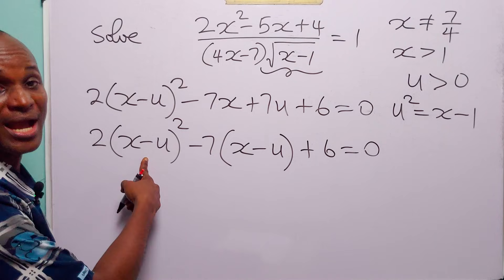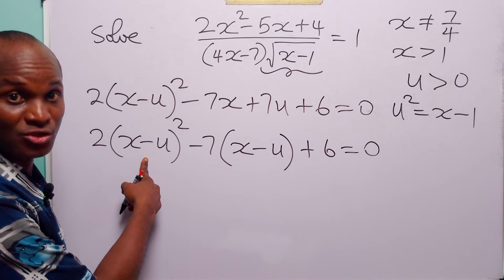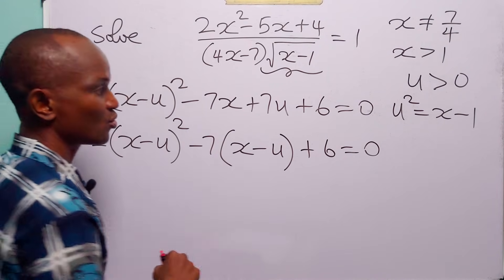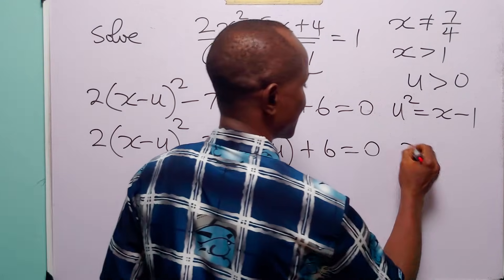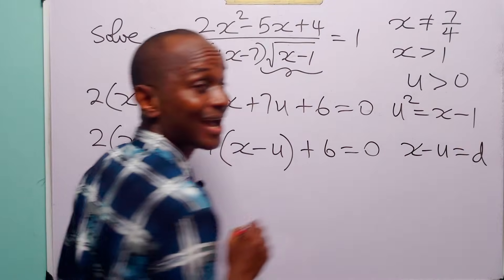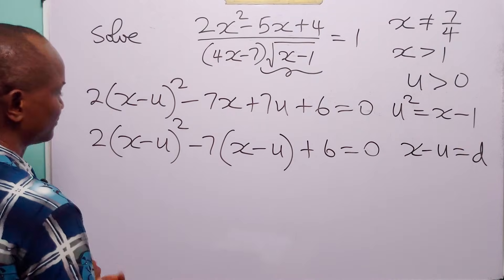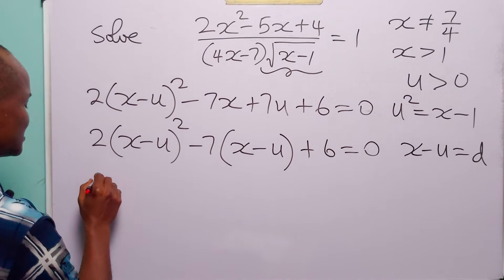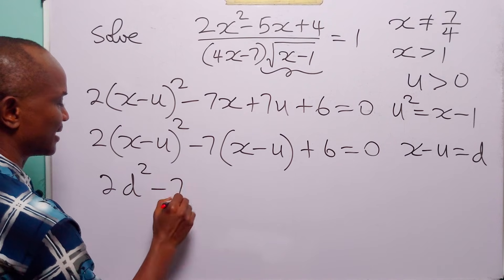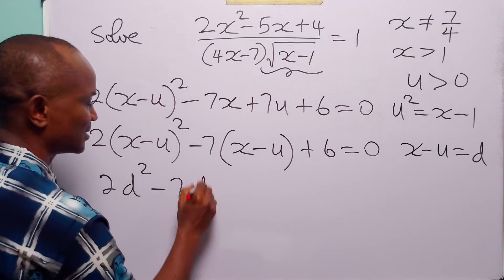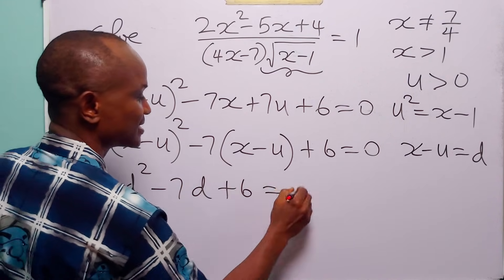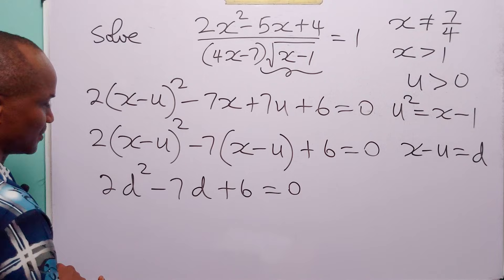We have x minus u appearing twice, so let x minus u equal the letter d. This equation becomes 2d squared minus 7d plus 6 is equal to 0.